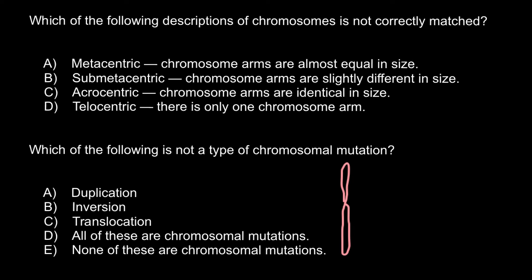Submetacentric — chromosome arms are slightly different in size. Here would be another example. As you can see, there is a long arm and a short arm. We call the long arm the Q arm and the short arm we call the P arm. P stands for petite. And answer C: acrocentric —